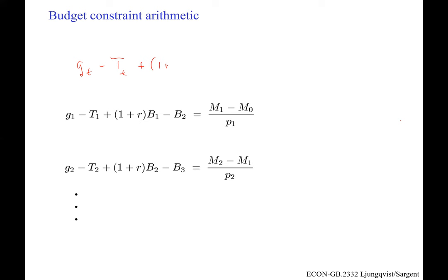The flow government budget constraint is written for each period T: (M_t minus M_{t-1}) over P_t equals the primary deficit plus interest payments minus new bond issuance. We write it for T equals 0, T equals 1, and so on — one constraint each period.